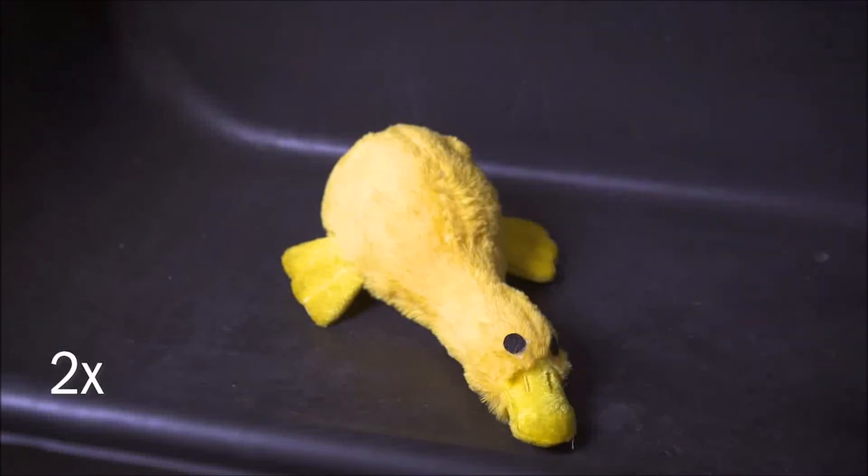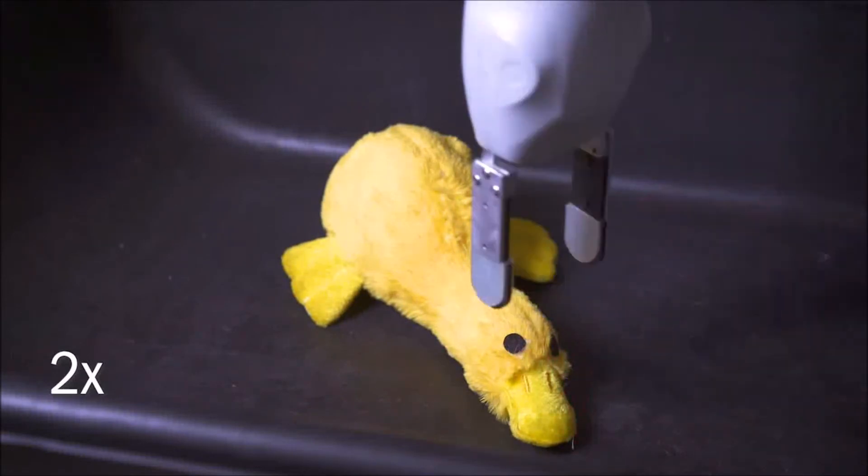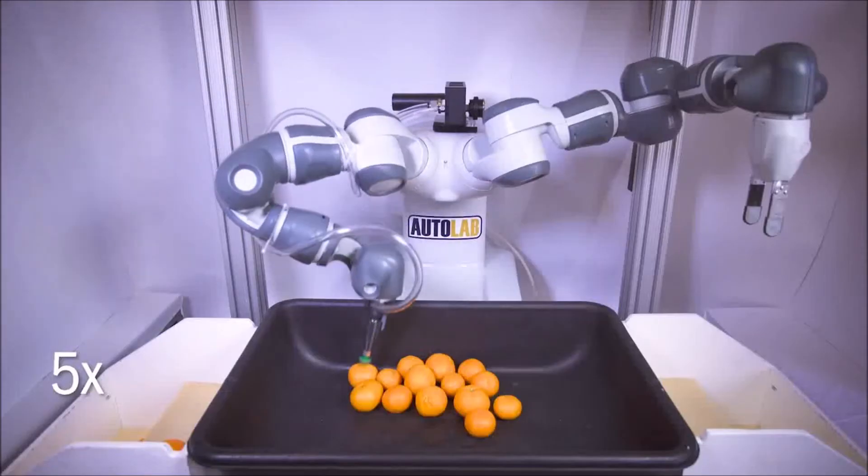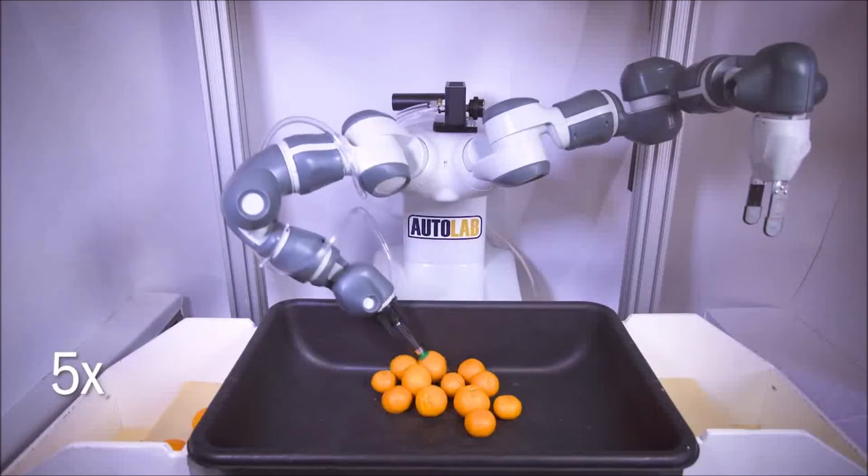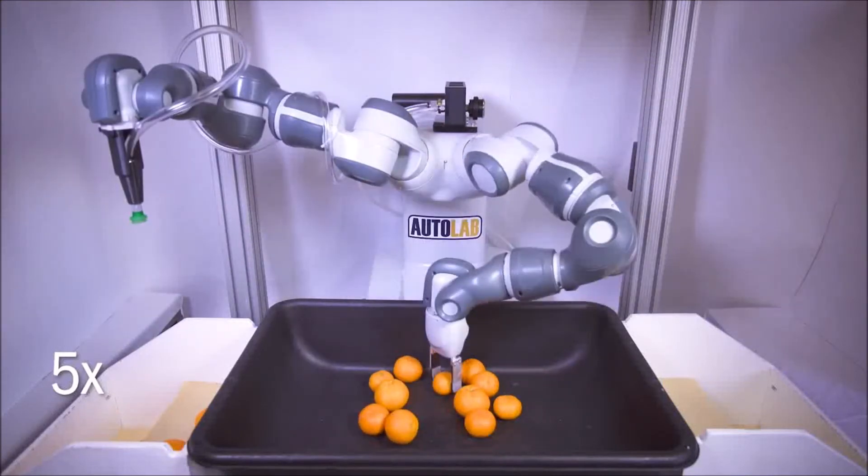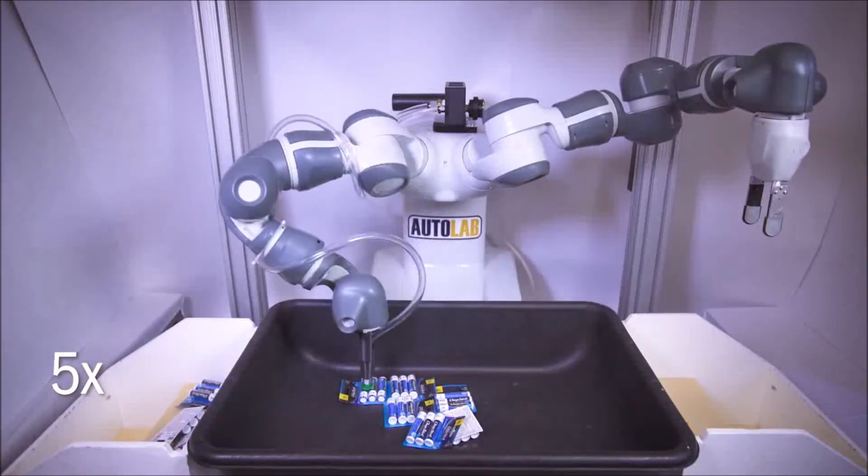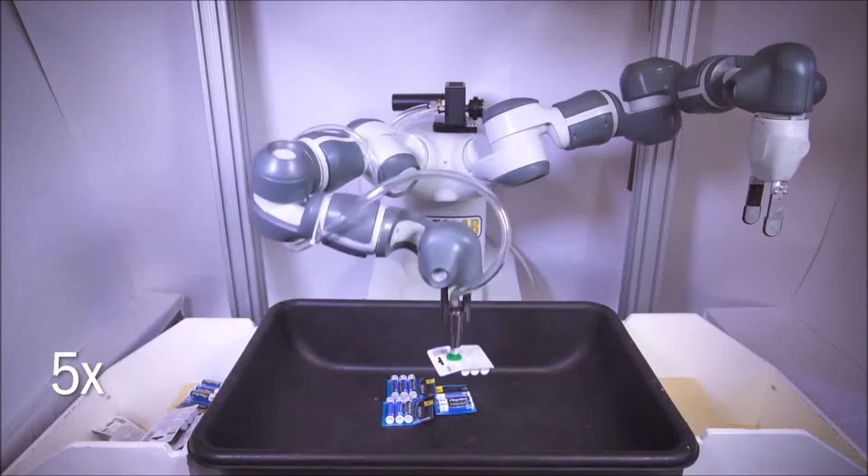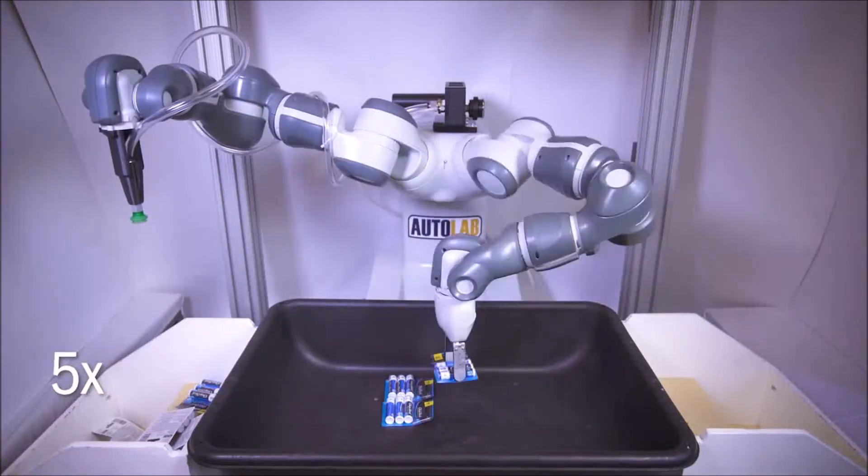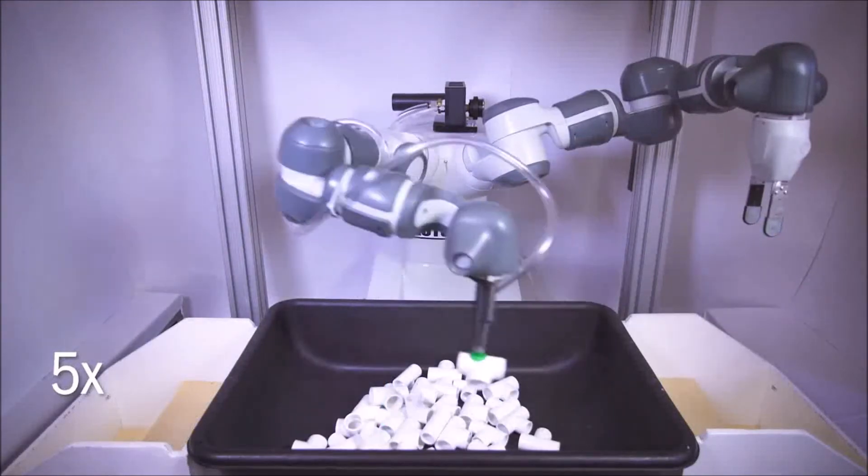To address this problem, we introduce an ambidextrous approach that is compatible with multiple grippers. DexNet 4.0 learns ambidextrous deep-grasping policies by training on synthetic datasets created with structured domain randomization and analytic models of sensors, objects, heaps, and the physics and geometry of each gripper.